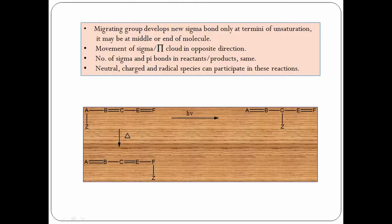In sigmatropic rearrangements, sigma and pi electron clouds move in opposite directions. The number of sigma bonds and pi bonds in reactants and products are the same. Neutral, charged, and radical species can participate. The 1,5-shift occurs under thermal conditions where Z moves to terminal F, while under photochemical conditions the 1,3-shift takes place where A migrates to terminal C.